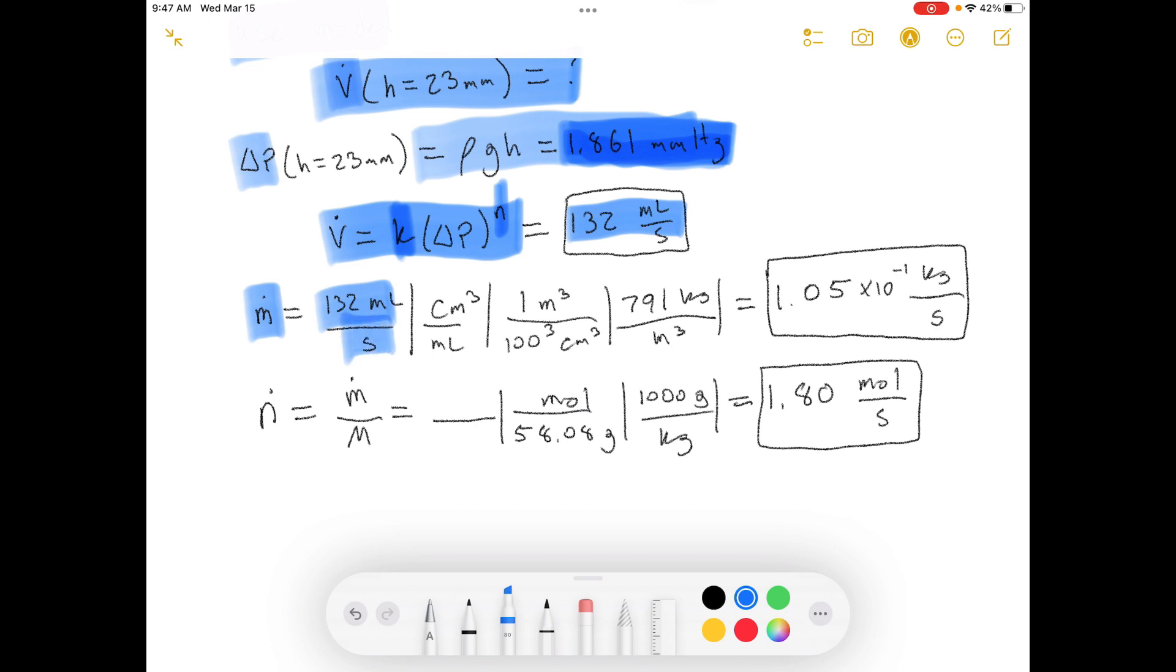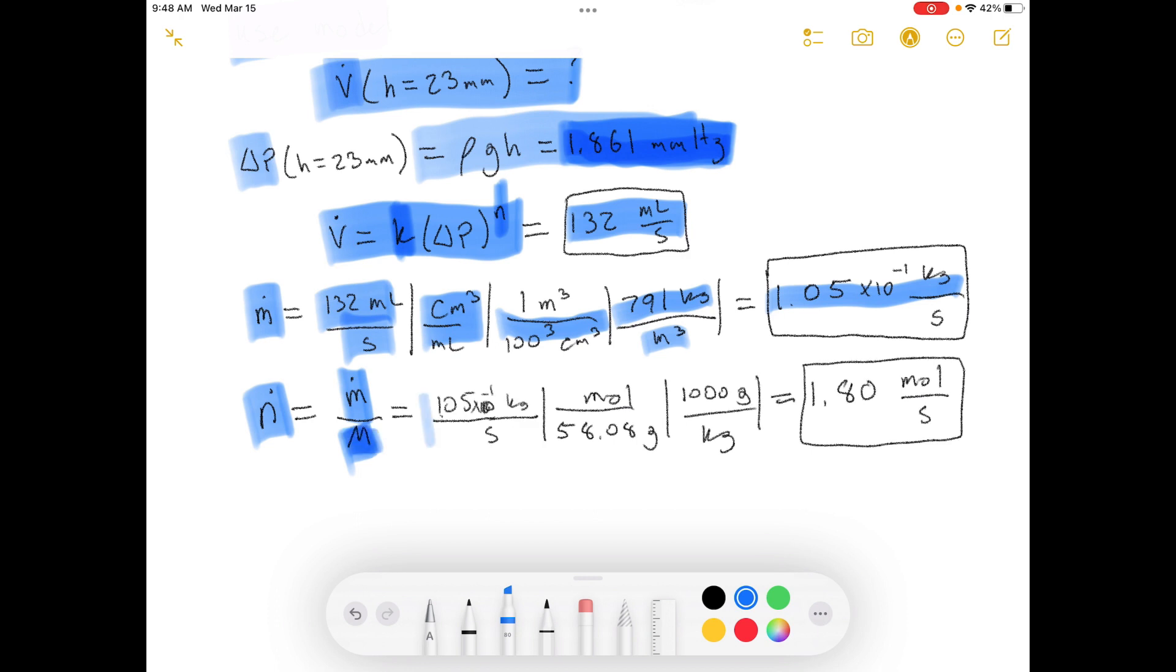So mass flow rate. And we convert this into units of length and a different volume. And then we multiply by the density. And then we get kilograms per second. Or you could change that into grams per second. They didn't give us a unit that we needed to put it in. So I just put it in kilograms per second. Then we've got our molar flow rate. And the molar flow rate is equal to mass flow rate divided by the molar mass. And then we do the conversions here. And we calculate that the molar flow rate is 1.8 moles per second. And that is it for part C and problem number 3.47.